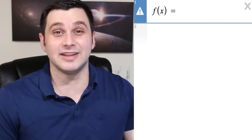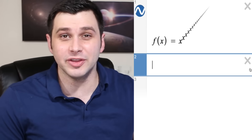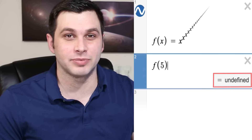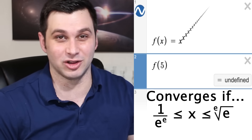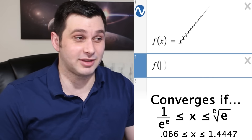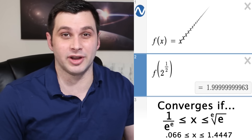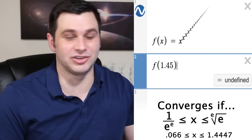If you take a function that is x to the x to the x and so on forever — the infinite tetration — this will diverge for most values. Like if you plug in 5, it obviously goes to infinity. But it will converge for any x between 1 over E^E and the E-th root of E inclusive, which are about .066 and 1.4447 respectively. So if you plug in the square root of 2 (about 1.414), it converges — in this case to exactly 2. But if you plug in something slightly out of bounds like 1.45, it just goes to infinity.